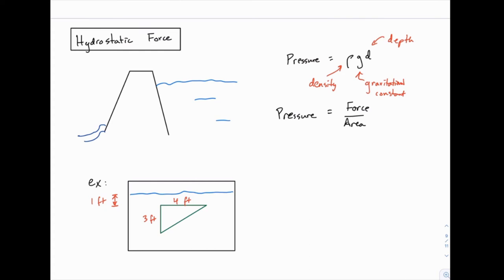So pressure in general is force divided by area. If we put these two pieces together, pressure and pressure, they're the same thing, so we can say force divided by area must equal ρgd. And then we can multiply both sides by the area because force is the piece we're actually interested in. So the force must equal ρgd times the area of the object.